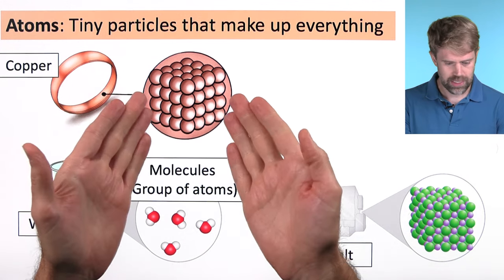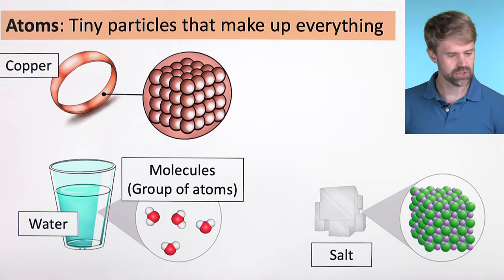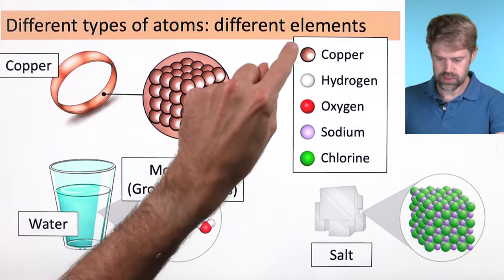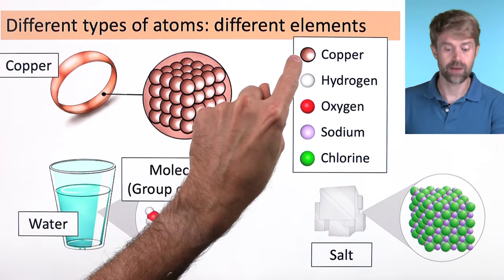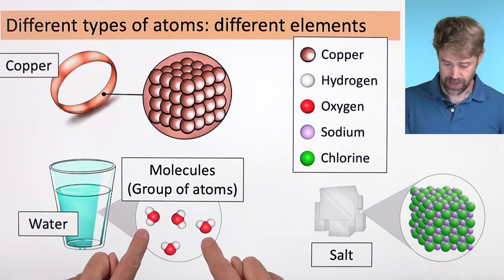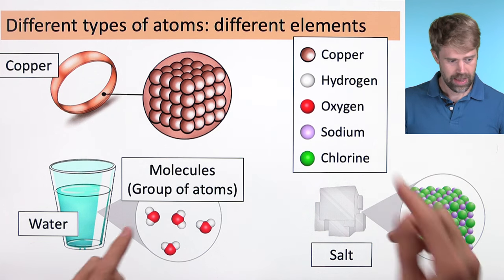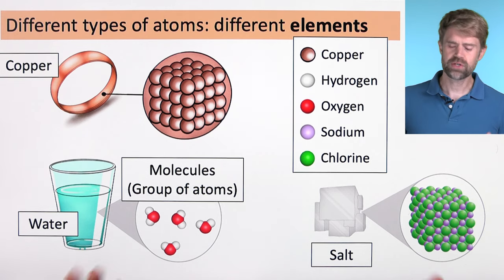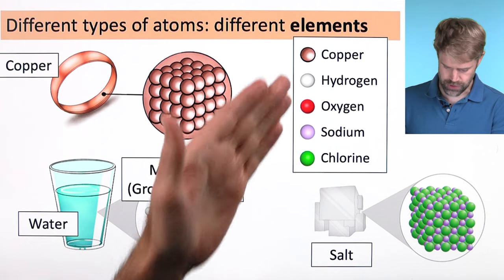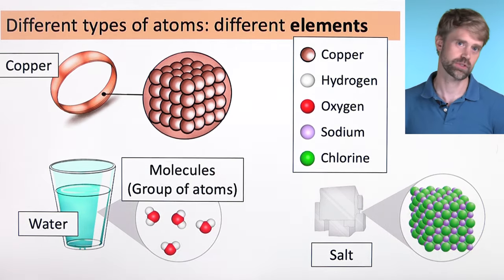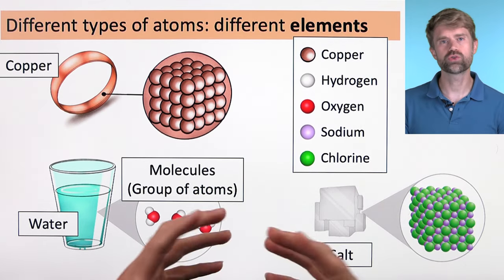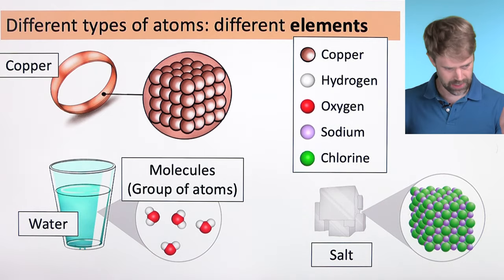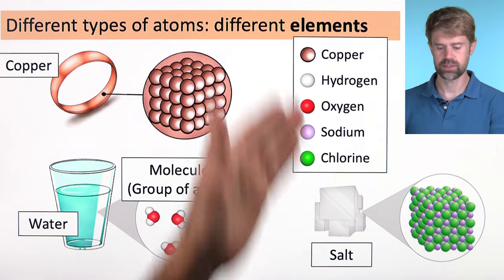Sometimes these atoms are arranged in groups called molecules — you see that here in the water — and sometimes the atoms are arranged in neat grids, like in the copper and in the salt. There are different types of atoms, shown here with different colors. A copper ring is made of copper atoms, water is made of hydrogen and oxygen, and table salt is made of sodium and chlorine. These different types of atoms are called elements. There are over a hundred different elements in nature.